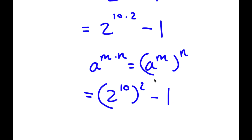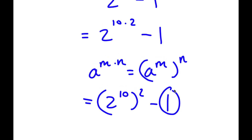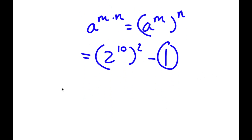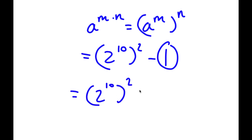Now we have 1 here, and 1 is the same thing as 1 to the power of 2, because 1 to the power of any number is going to equal 1. So now I have 2 to the power of 10 to the power of 2 minus 1 squared. I'm going to write 1 as 1 squared because it's the same thing.